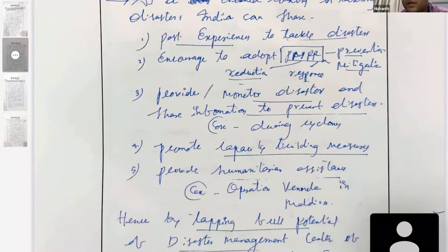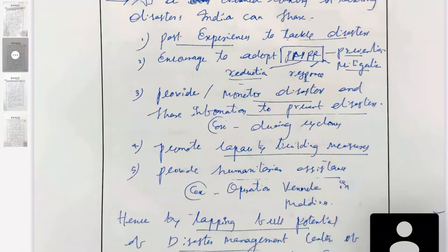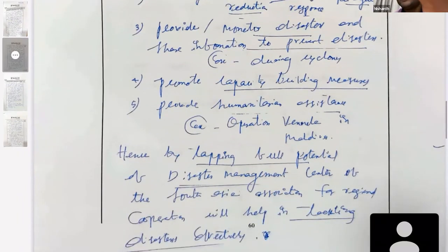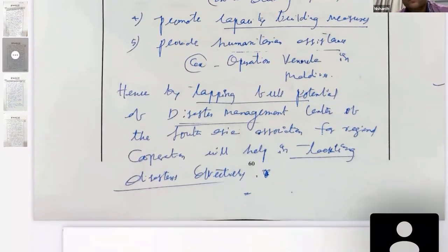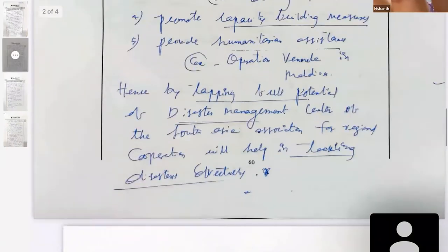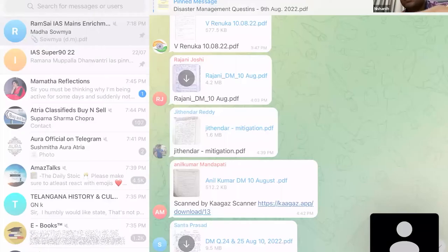India is a signatory to Sendai — you can write about the satellite system. You have also mentioned operations in Maldives and disaster relief in Nepal, where India has been leading from the front. Overall, Jitendra, it's a very good, above-average answer, especially since you have written it without referring to any material.